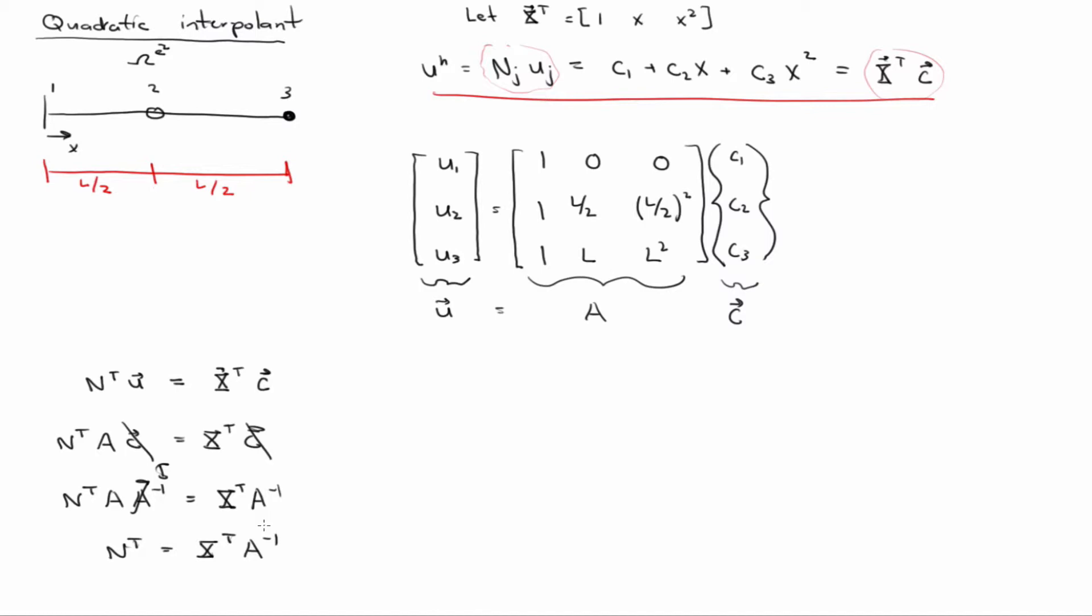Alright, so you might write this as, you have x transpose, and then you just have x transpose evaluated at x equals x1 for the position of node 1, x equals x2, x equals x3, inverse. And this is for the quadratic case, but it would work if I go higher order.